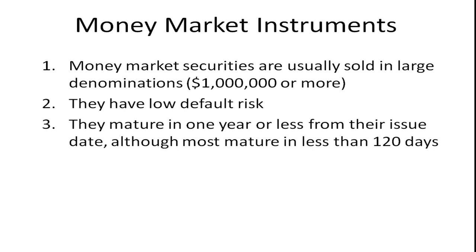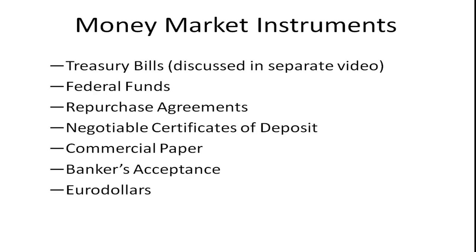You may have heard the term capital markets — that's for longer-term securities such as bonds or stocks. Some of the different money market instruments include: treasury bills — I'm not going to talk about them in this video because I have a separate video covering them in greater detail — but I am going to talk about federal funds, sometimes referred to as Fed funds, repurchase agreements, negotiable certificates of deposit, commercial paper, banker's acceptance, and eurodollars. All are money market securities or money market instruments.